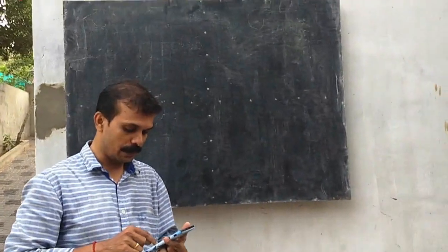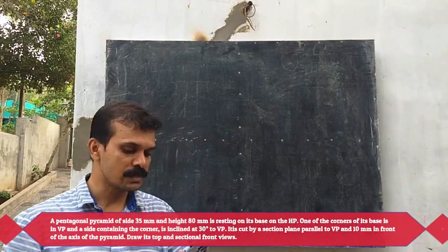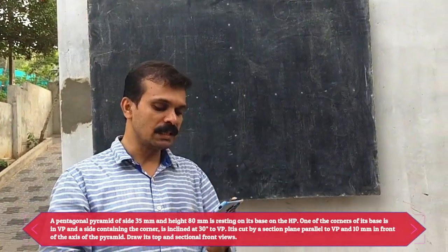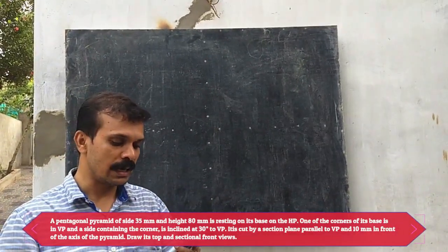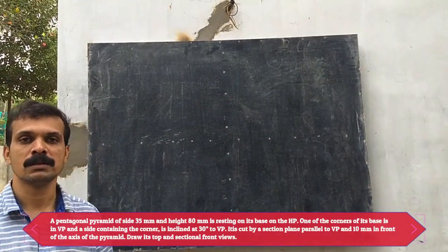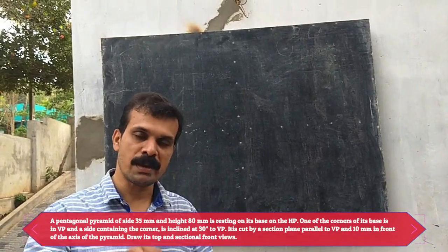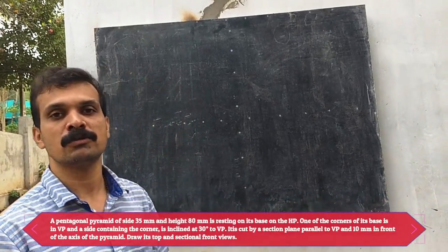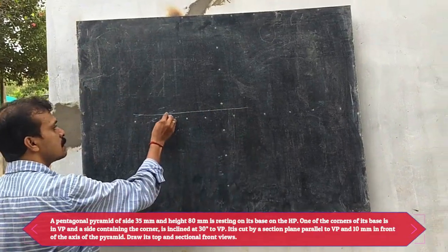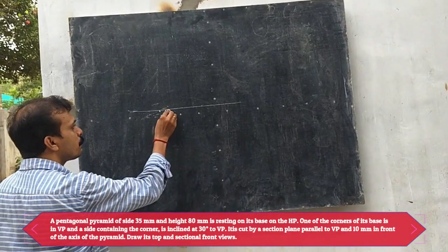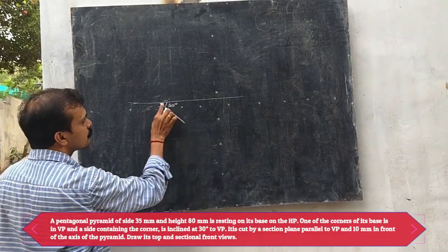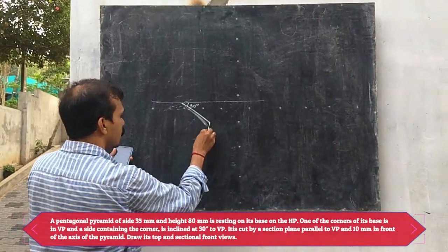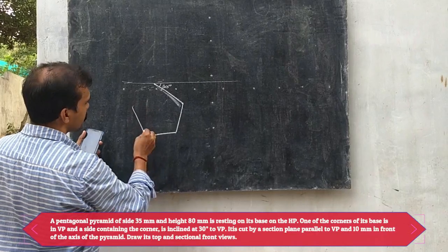Now we are moving to the next question, question number 5.4. The question is: a pentagonal pyramid of side 25mm and height 60mm is resting on its base on HP. One of the corners of its base is touching the VP and the side containing that corner is inclined at 30 degrees with the VP. You can start with the XY line. This is the corner which is touching the VP. From that point, at an inclination of 30 degrees, start the pentagon edge of 25mm, and keeping that edge we can complete the pentagon.